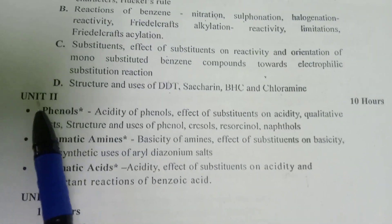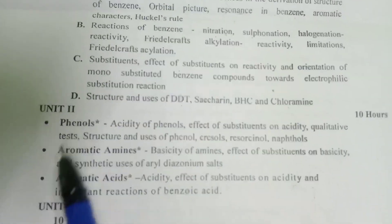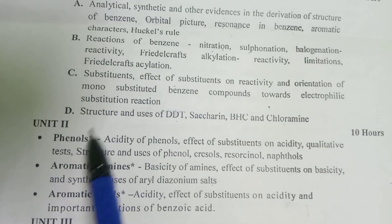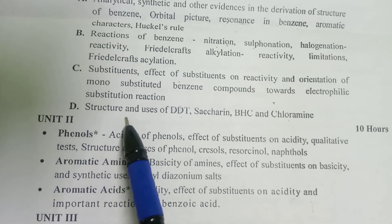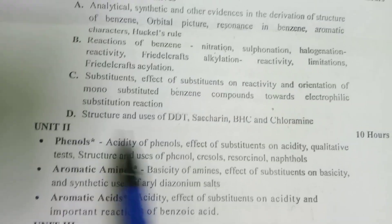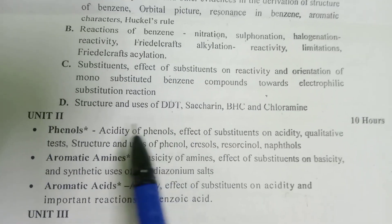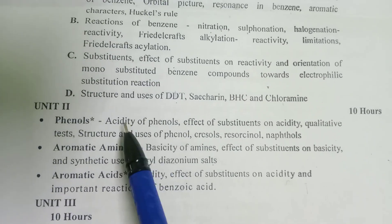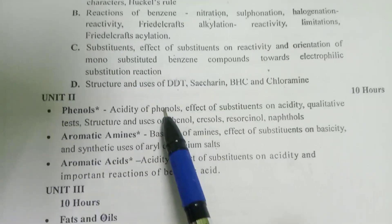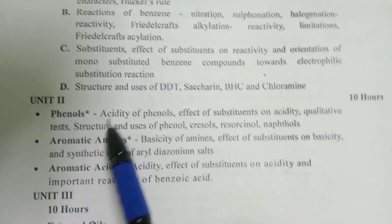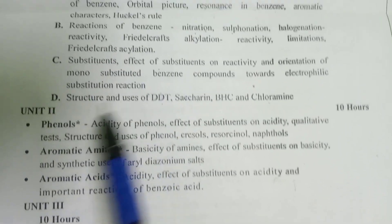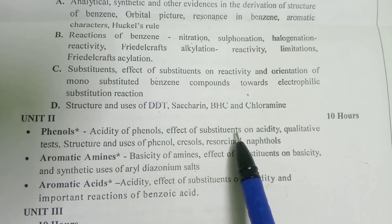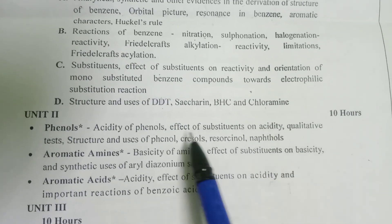Next, Unit 2. Unit 2 is very important — phenol and aromatic acids. Phenol is related to the benzene ring. Phenol is very important when you compare the acidity — phenol versus carboxylic acid versus alcohol. The acidity comparison is very important. Phenol acidity and the factors describing the substance are covered here.